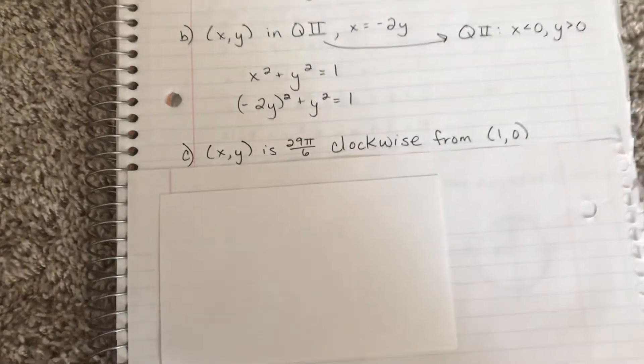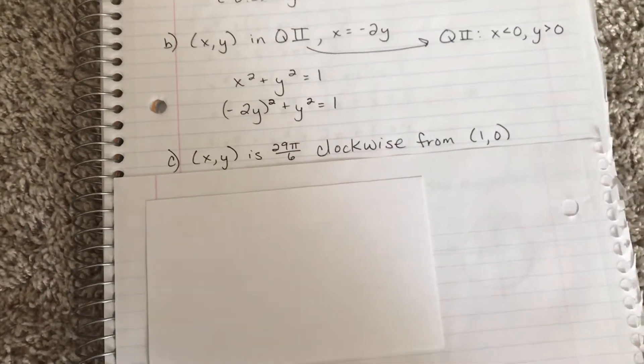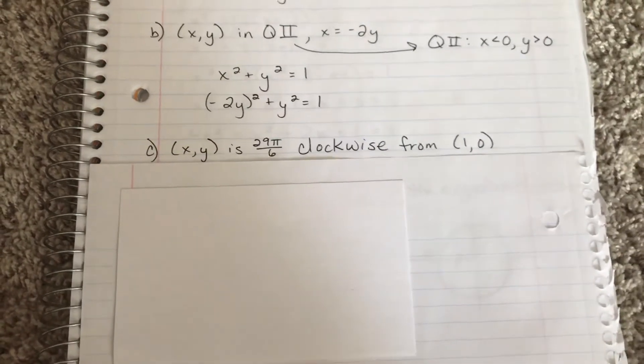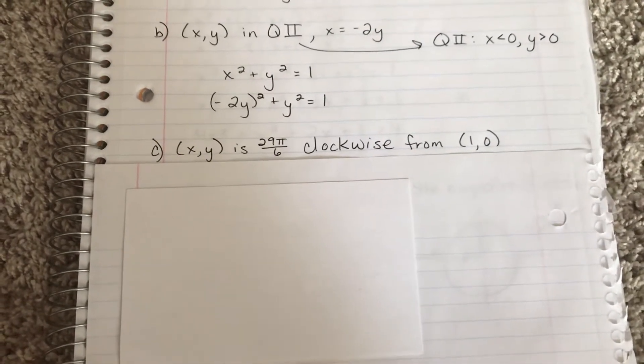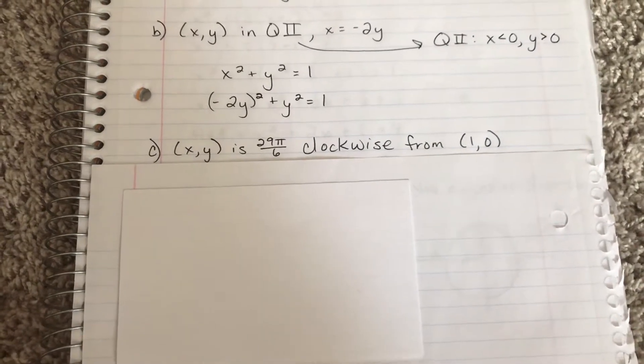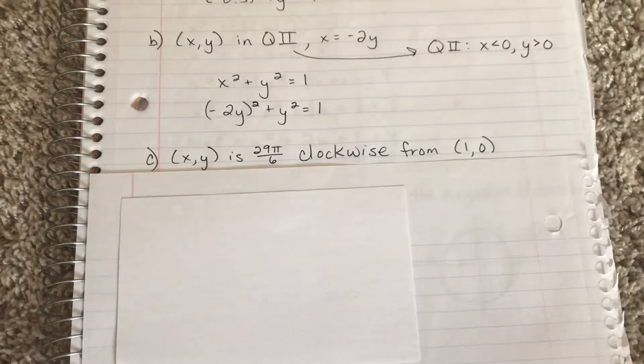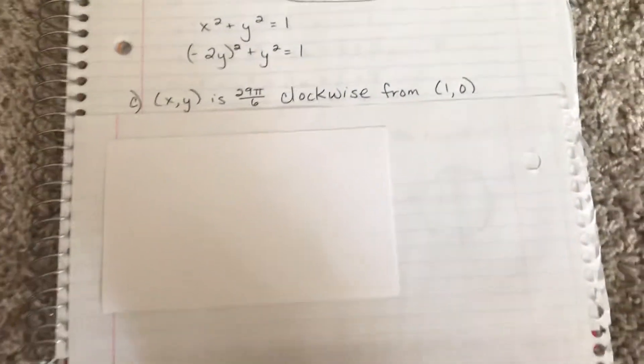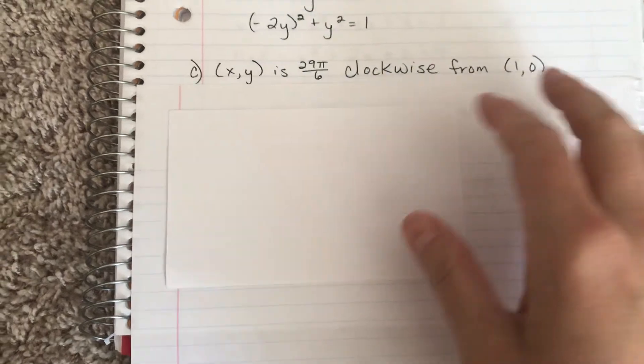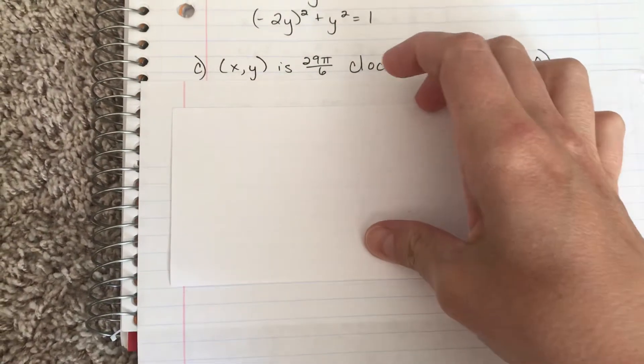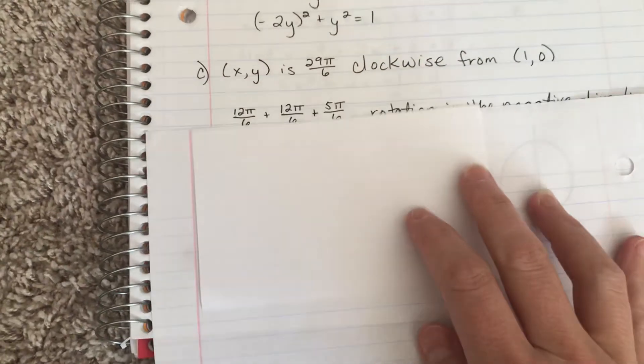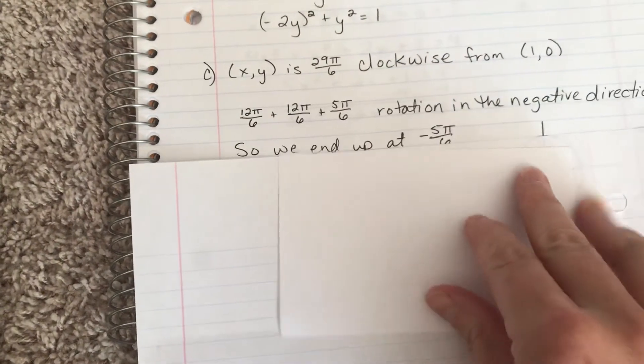Moving on to part c. We don't have to do as much work on this one if we just think about it. The trick to this one though is that it's going around more than once and it's going clockwise, and clockwise is negative rotation, so we've got to be a little careful about that.